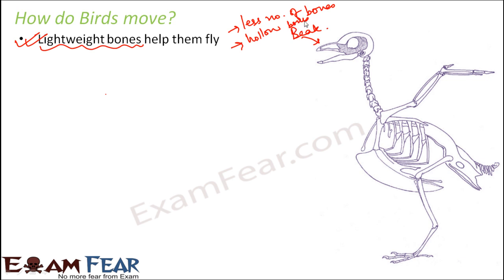Less number of bones is one factor, and secondly, hollow bones. When the bones are hollow they are light in weight, so birds can very easily fly because their weight is light and they can easily move upward. At the same time, they have strong and powerful muscles because their muscles control the movement of the wings. The breast muscles are the largest muscles as they actually control the wings.